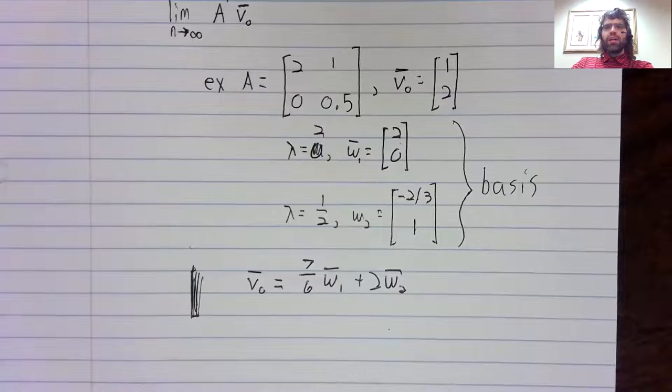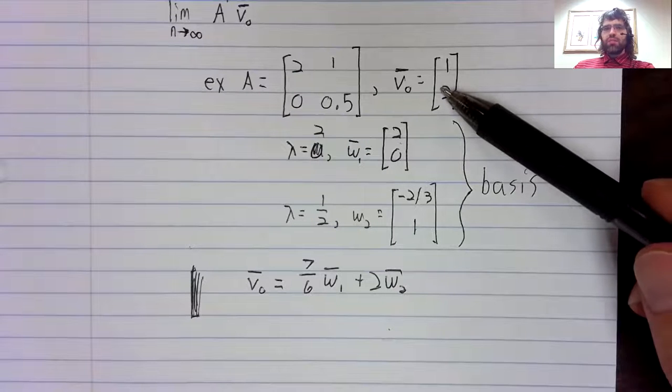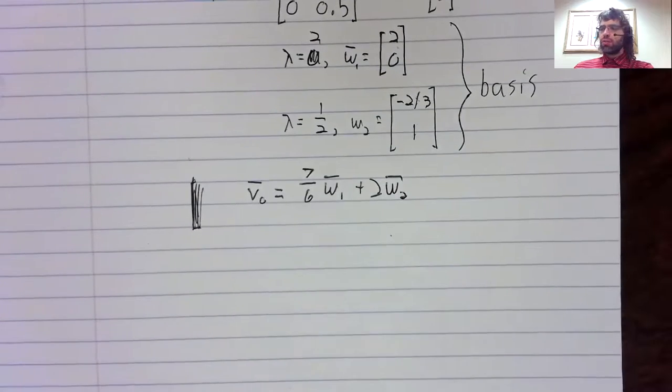A quick bit of Gauss-Jordan elimination, and we've written V_0 in terms of these eigenvectors.